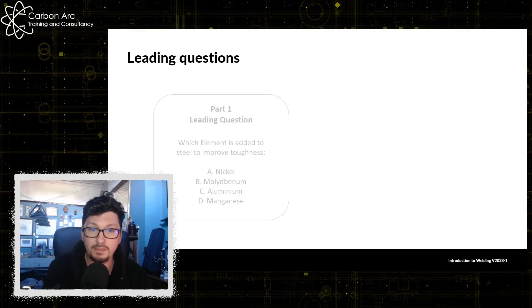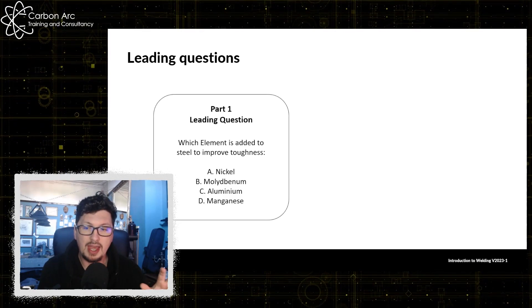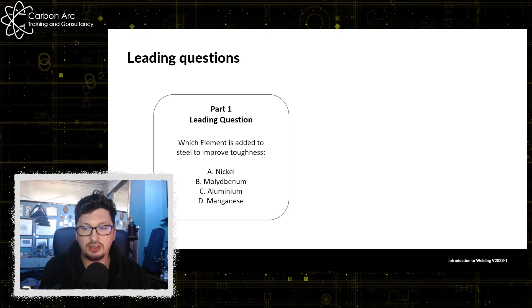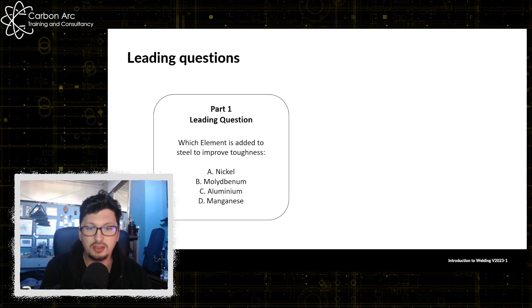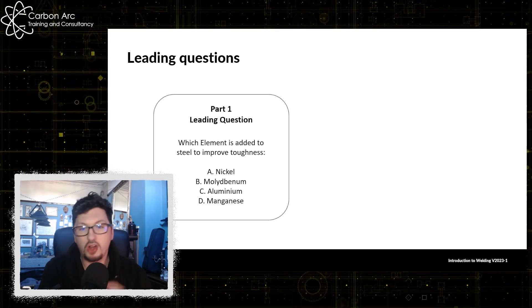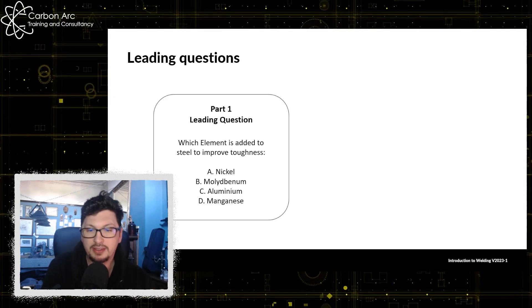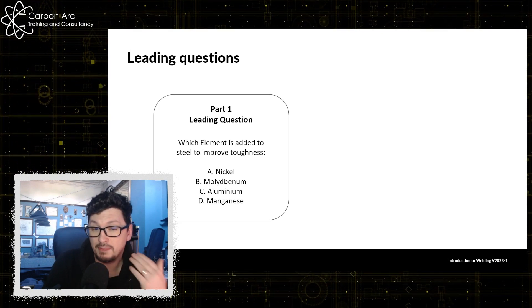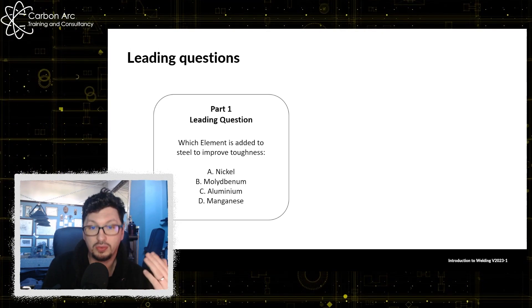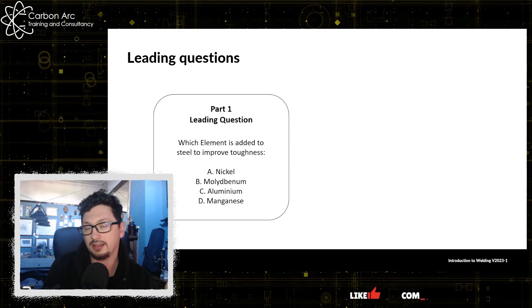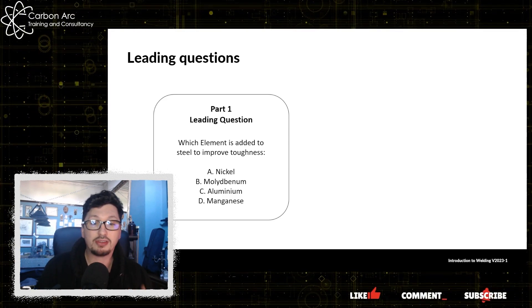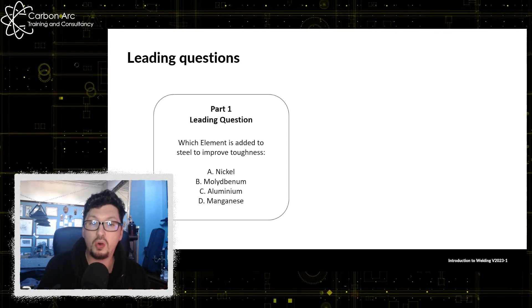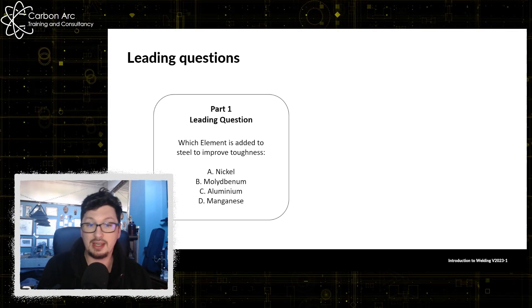So let's have a look at another one. We've got which element is added to steel to improve toughness. So we've got nickel, aluminum, aluminum, or manganese. Now we add manganese to steel to make carbon manganese steels because that has a good increase in toughness with a smaller increase in hardness. So that would be manganese.